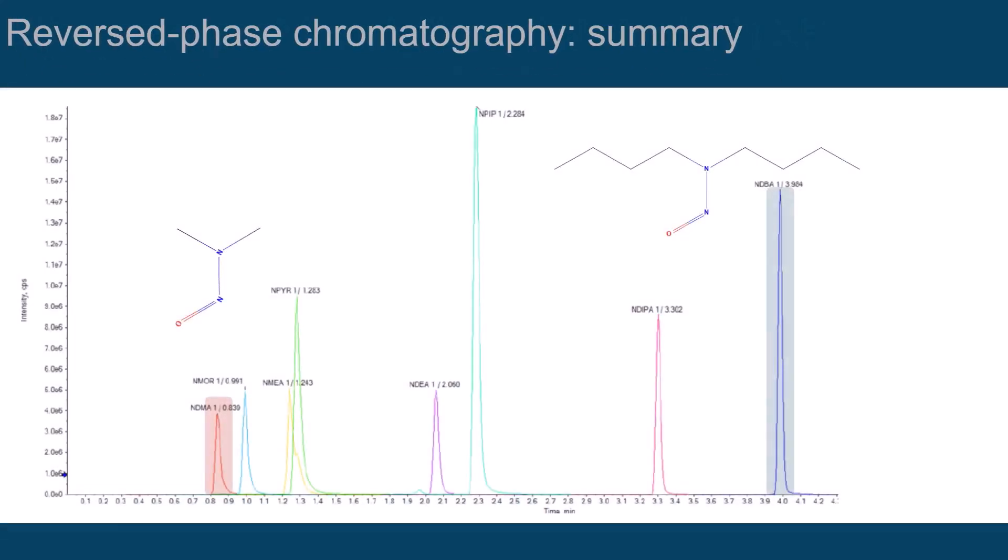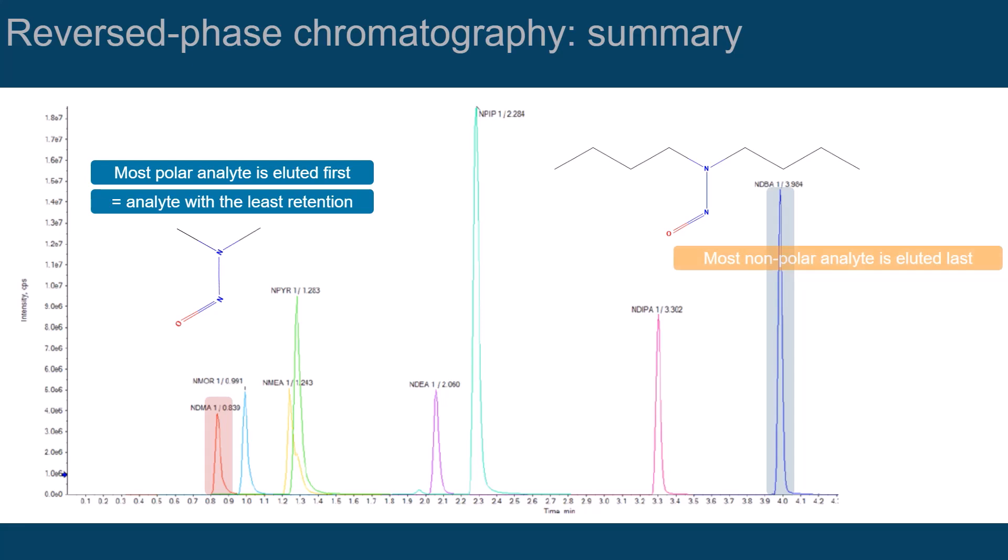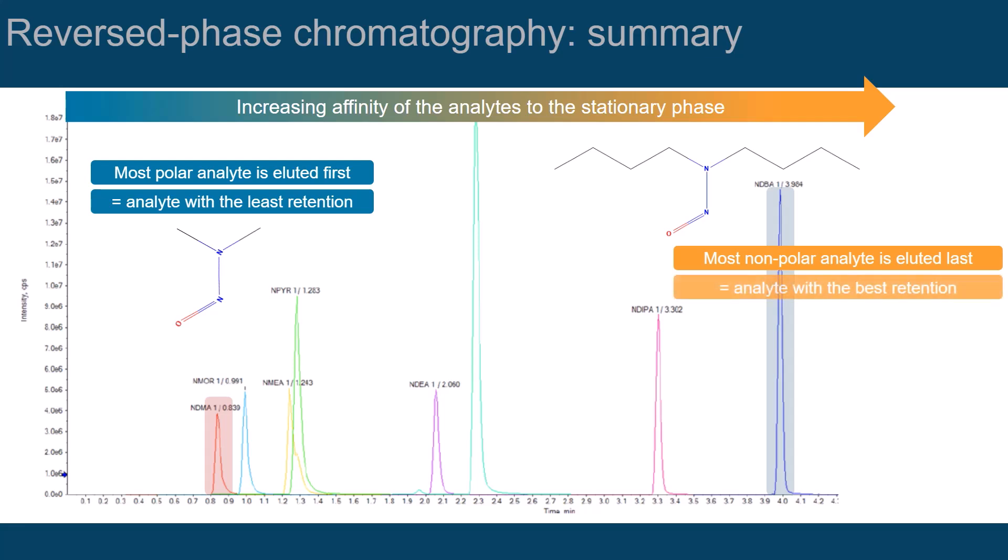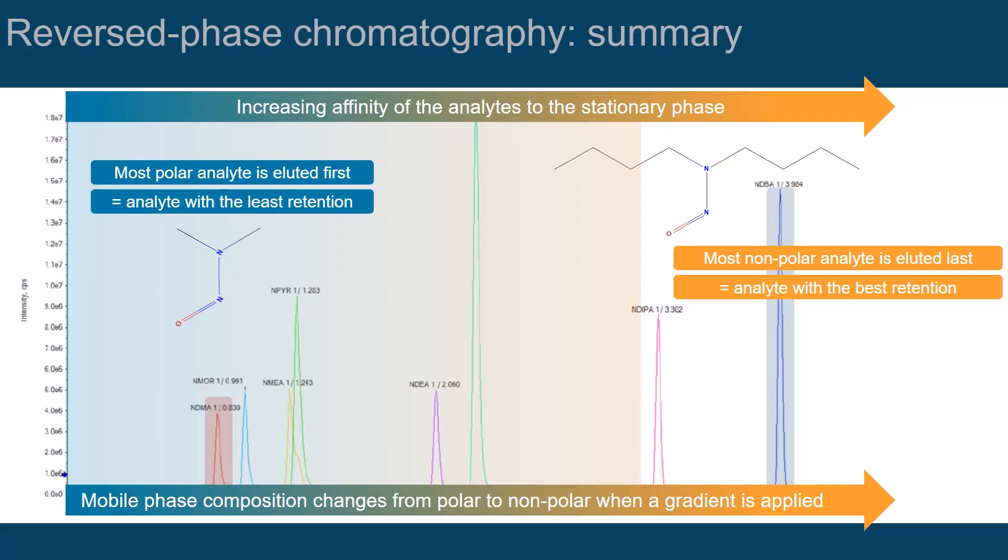In summary, in reversed-phase the most polar analyte is eluted first, that is, it has the least retention. The most non-polar analyte is eluted last, as it has the highest affinity to the stationary phase. It is best retained. When a gradient elution is applied, it starts with a more aqueous composition of the mobile phase. The content of non-polar organic solvents in the mobile phase is gradually increased over the time course of the LC process.